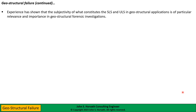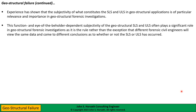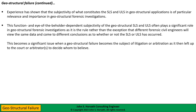I'm emphasizing these points because the ambiguity and divergence of opinion about what constitutes a serviceability limit state can even occur with the ultimate limit state. In some geostructural applications, we've reached the ultimate limit state but not had a collapse in the traditional sense — we can have very large-scale displacements of soil slopes, earth retaining structures, or building foundations that stop short of collapse, yet by any reasonable context we've had a failure. This subjectivity of what constitutes the limit state is very relevant and important for geostructural forensic investigations, as different forensic civil engineers will view the same data and come to radically different conclusions.